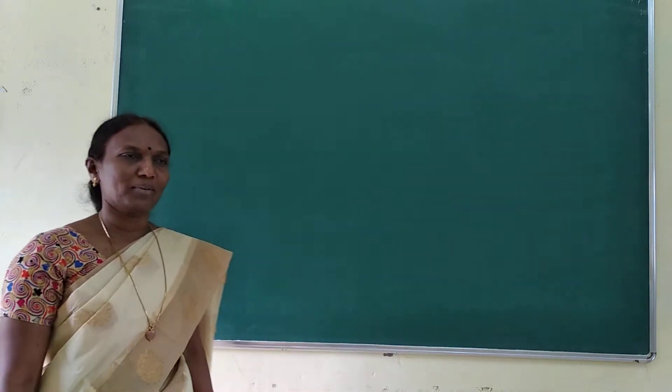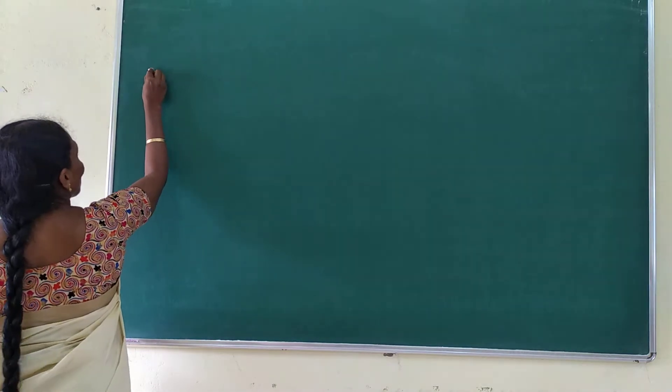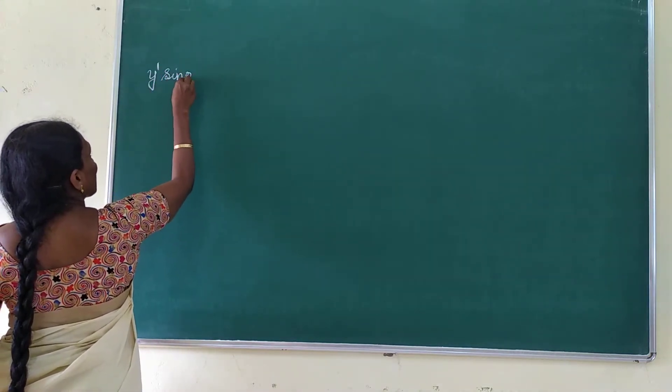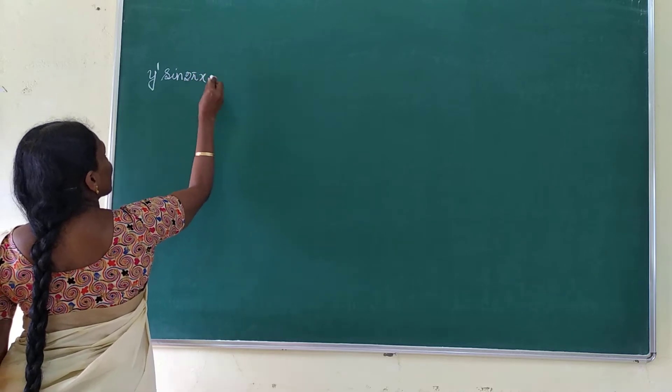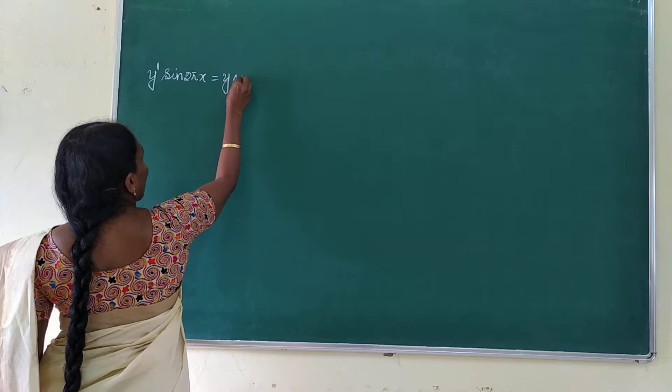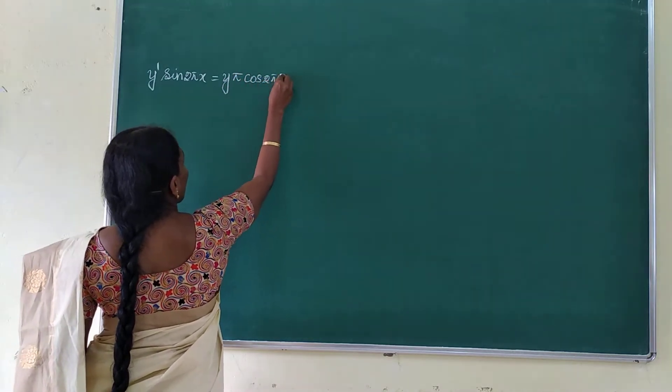Now we will see how to solve the problem in a dynamic differential equation. The equation is y' sin 2 by x is equal to 5y cos 2 by 3x.